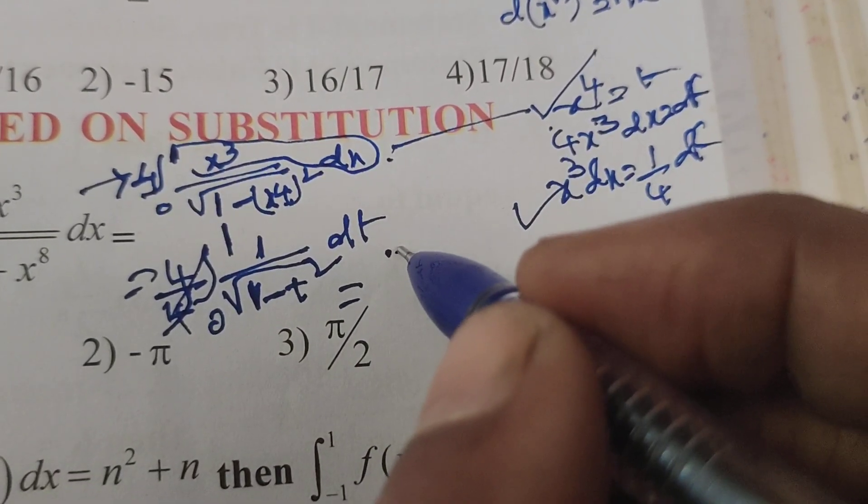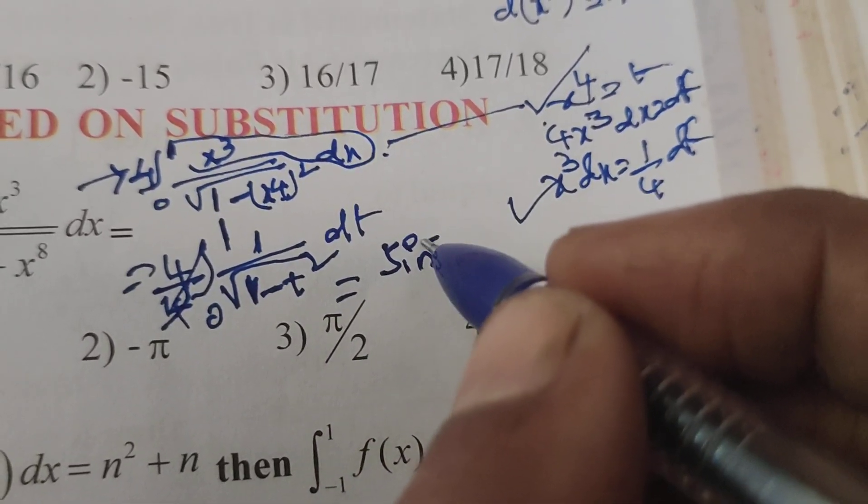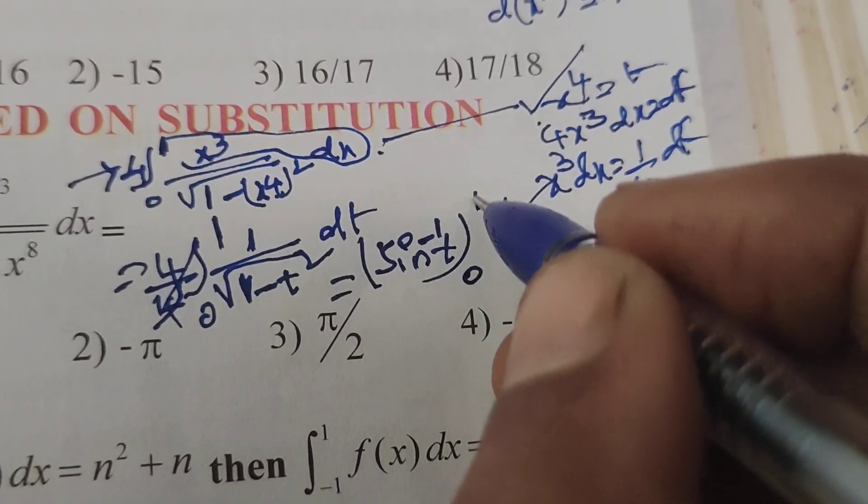Integral of 1 by root of 1 minus x² is sin⁻¹x, but in place of x here t is there, so sin⁻¹t. After substitute limits 0 to 1.